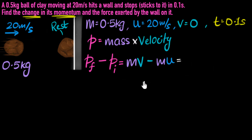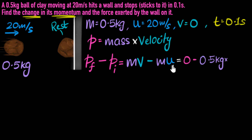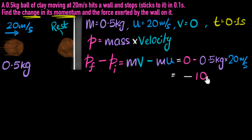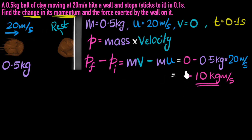If we plug in, the final velocity is zero so the final momentum is zero, minus the initial momentum: 0.5 kilograms times 20 meters per second. We get negative 0.5 times 20, which is 10. So the change in momentum is negative 10 kilogram meters per second. We'll talk about what the negative sign is telling us when we get to the next part of the problem.